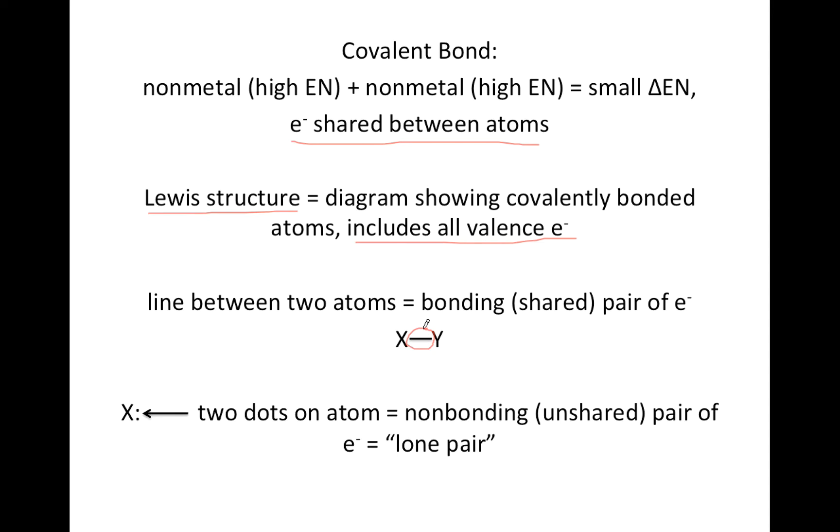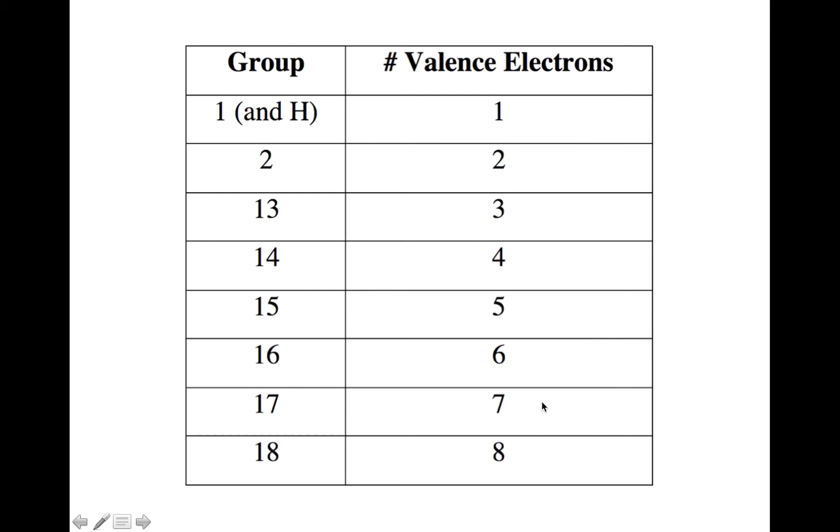a line between two atoms represents a bonding or shared pair of electrons and two dots on an atom represents a non-bonding or unshared pair of electrons, which is also called a lone pair.